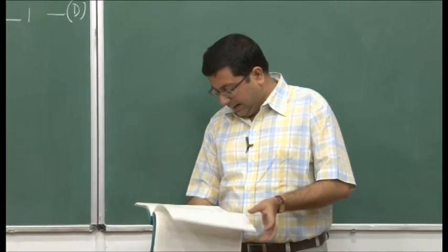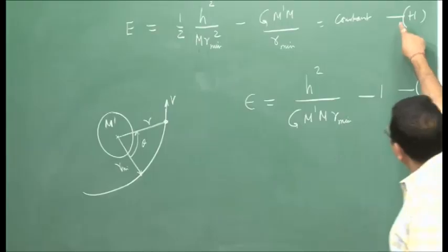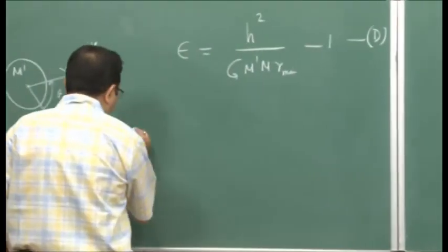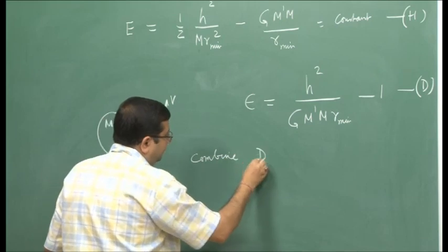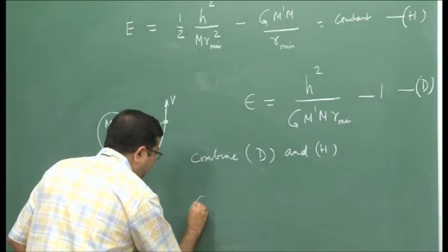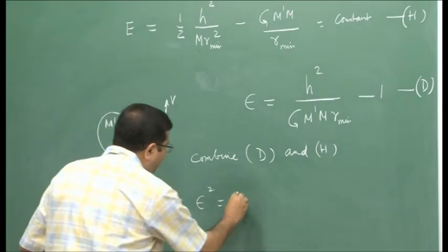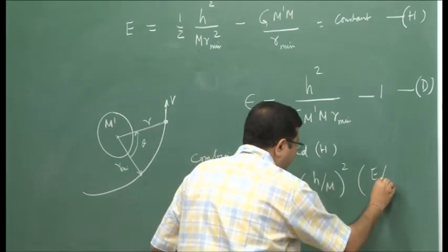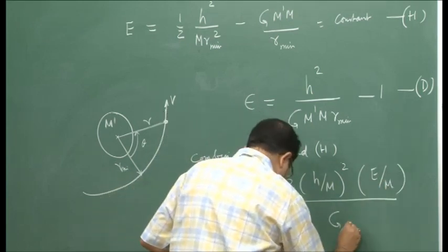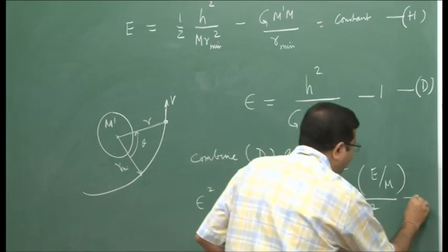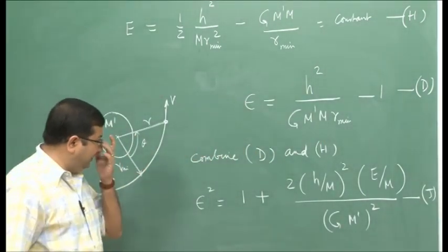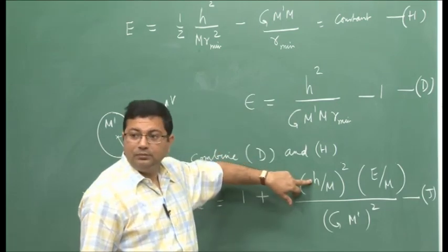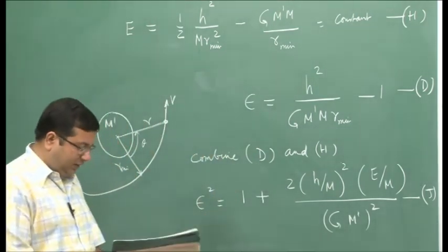If I take expression D and combine it with equation H, I can get an expression for epsilon in terms of other parameters. After combining, I get epsilon-squared equal to 1 plus 2 times (h/m)-squared times (E/m), divided by (G M-dash)-squared. Let me call this equation J. This gives an expression for eccentricity in terms of angular momentum, mass, and energy.